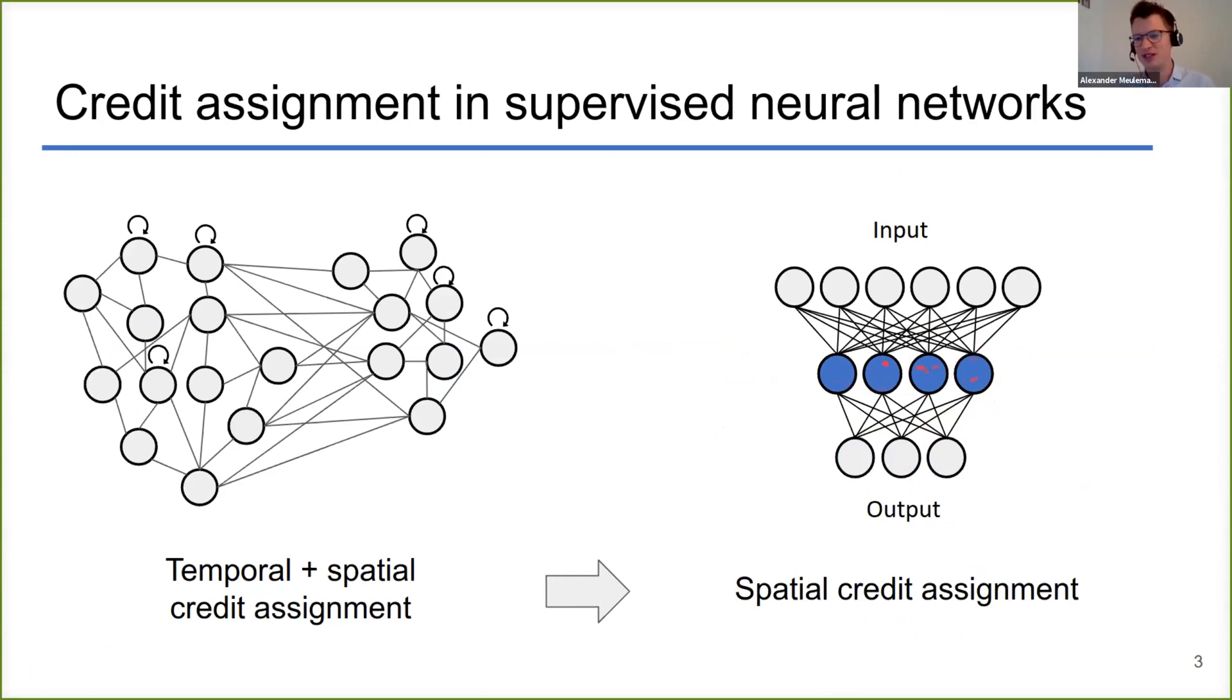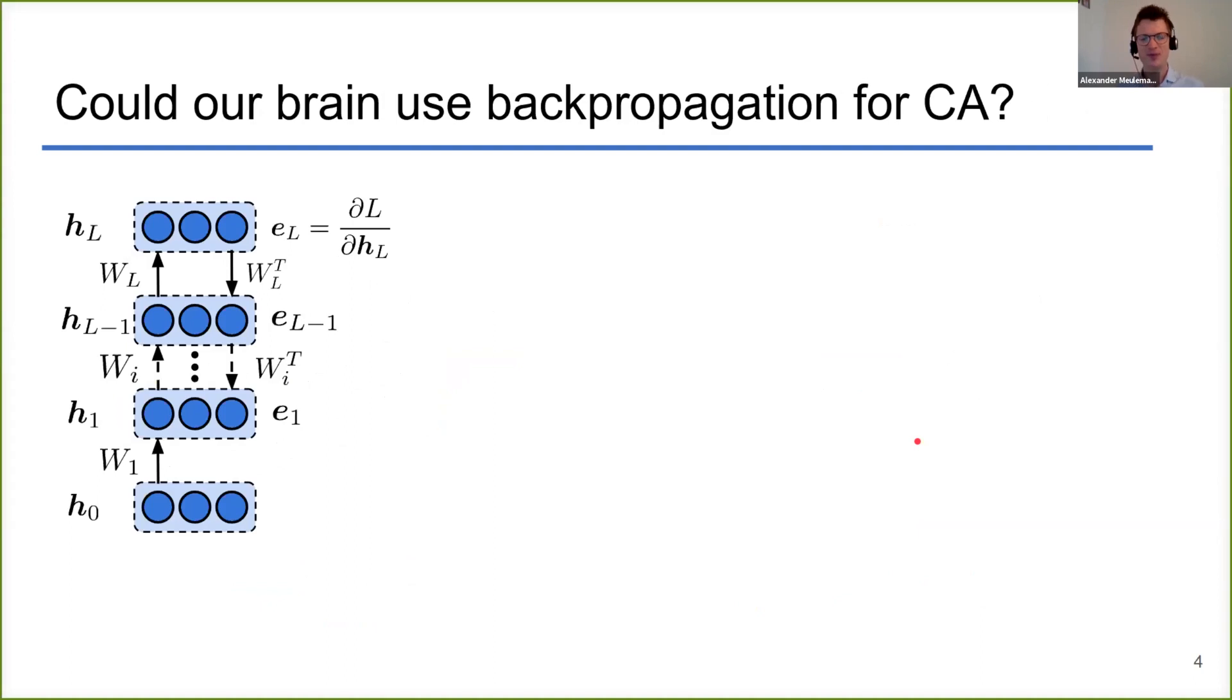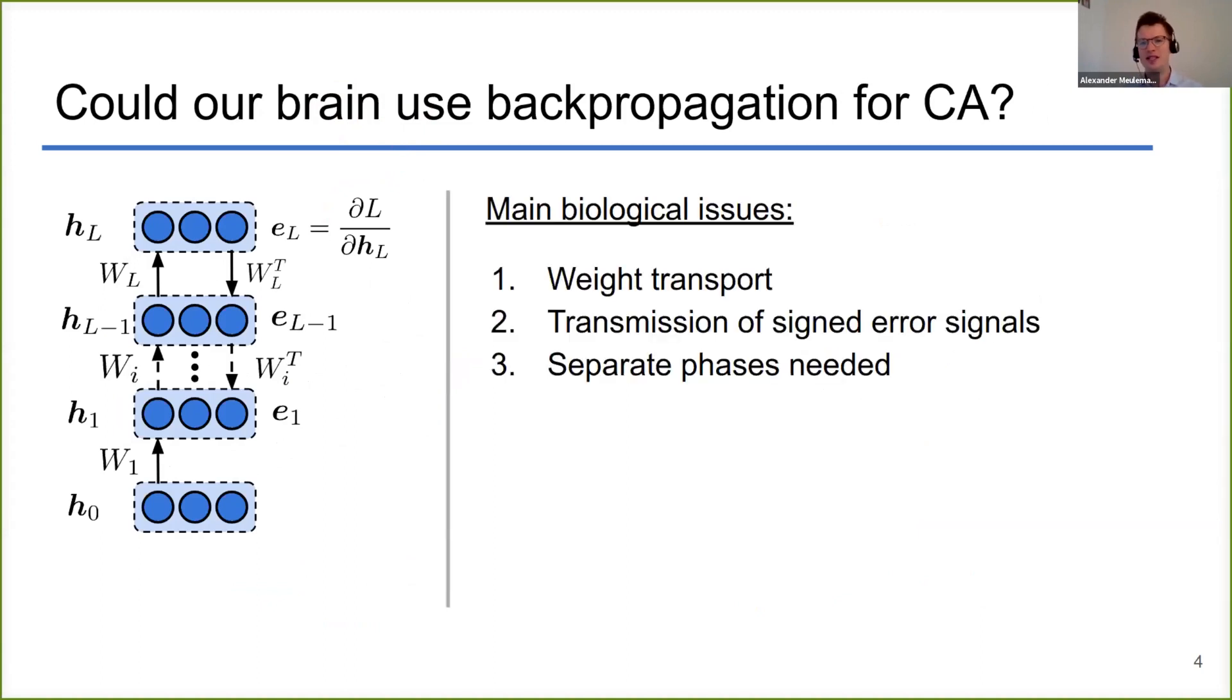We use rate-based encodings, no spiking neural networks—a big simplification that we made. In artificial neural networks, as Arash already told us, the credit assignment problem is generally solved by error backpropagation. However, it is considered biologically implausible by many for three main reasons. First, you have the weight transport issue which Arash already explained.